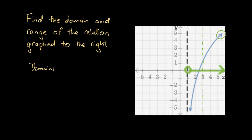We can quickly confirm that any x values that are less than x equals 1 are not valid inputs. Let's choose an arbitrary value, say x equals minus 3. If we draw a dotted line above and below x equals minus 3, we would not get an intersection with this curve. Consequently, it's not a valid input because if we input it into the relation, the relation wouldn't yield a y value. So we can write this domain as x is greater than 1. Notice that we didn't write greater than or equal to because x equals 1 is not a part of the domain.